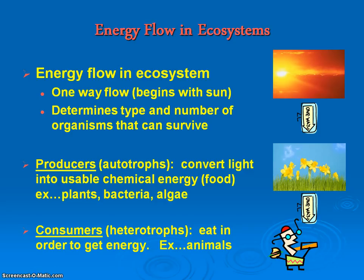Certain types of plants can be both consumers and producers, like the Venus flytrap or the pitcher plant. Those particular types of plants live in areas where certain nutrients, like nitrogen, are lacking within that system. So they will go through photosynthesis, but they need other sources of nitrogen, so they will capture insects and other things to get those resources.